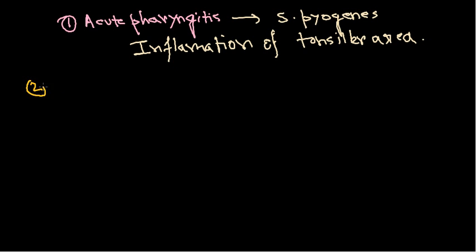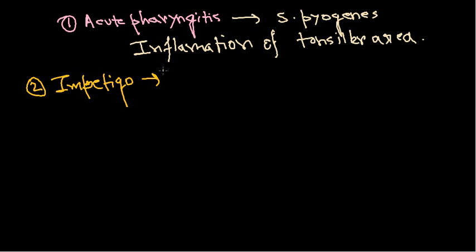The second important disease that Streptococcus can cause is impetigo. It is usually caused by Staphylococcus aureus but is also caused by some Streptococcus species. This disease begins on any exposed surfaces, most commonly the leg surface, which is much more vulnerable to catching impetigo.